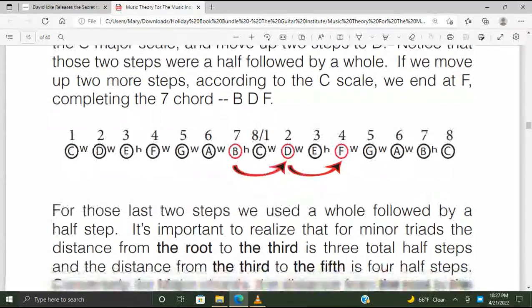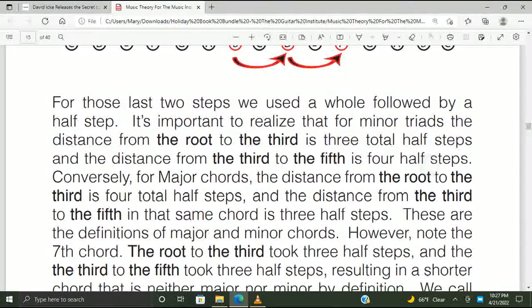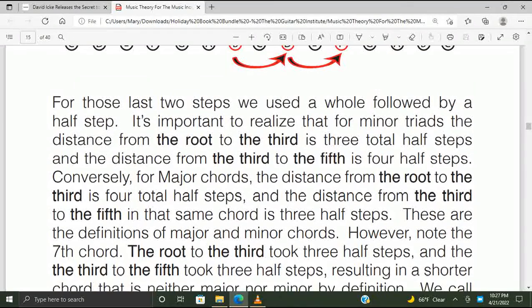For those last two steps we used a whole followed by a half step. It's important to realize that for minor triads the distance from the root to the third is three total half steps, and the distance from the third to the fifth in that same chord is three half steps.